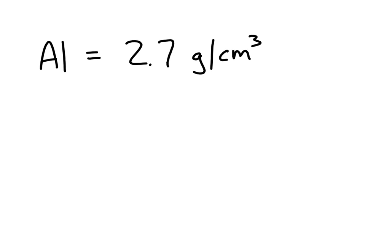aluminum's density is equal to 2.7 grams per cubic centimeter. What we need to understand is this is actually an equivalency statement. It's saying that for every 2.7 grams of aluminum is going to be equivalent to 1 cubic centimeter of aluminum.